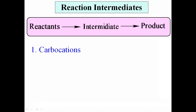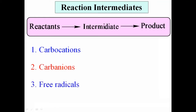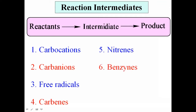Examples of reaction intermediates include carbocations, carbanions, free radicals, carbenes, nitrenes, arynes (also known as benzymes), and elydes. These are some of the examples of reaction intermediates formed during organic reactions. To study the mechanism and reactivity of organic reactions, we must know what type of reaction intermediate is formed during the reaction.